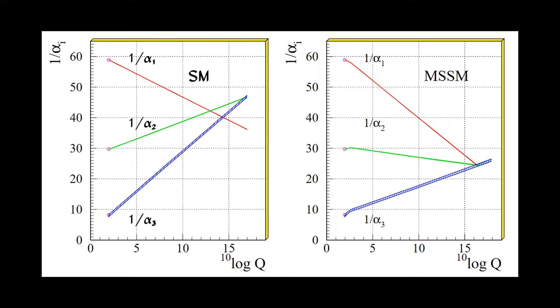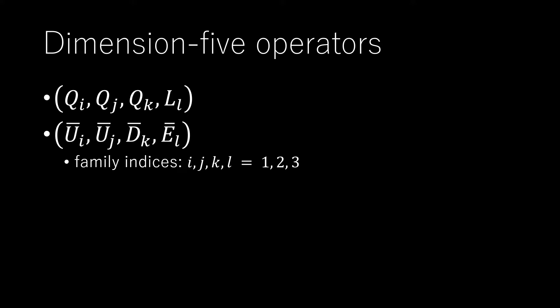However, in SUSY GUTs there are additional sources for baryon number violation dimension 5 operators. The dimension 5 operators have a dimension full coupling of order 1 over Mg. The dominant decay modes from dimension 5 operators are p to K plus nu bar.